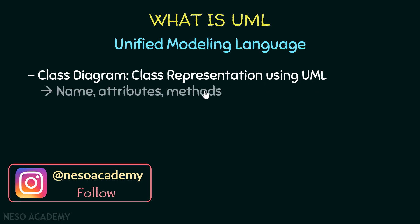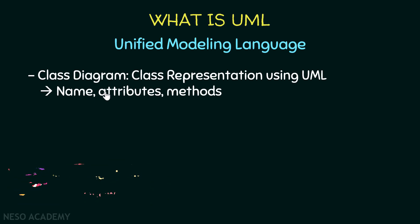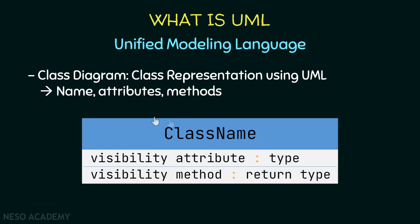Using a class diagram we can specify the name, the attributes, and the methods of a class. This is a template for a class diagram. First we specify the class name, then we specify the attributes, and then after a separator we specify the methods. Remember that the attributes and the methods are called members.